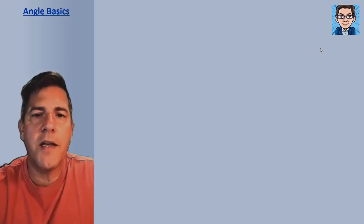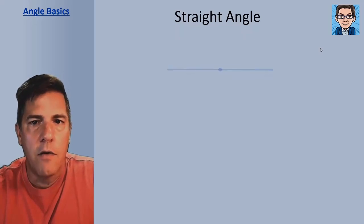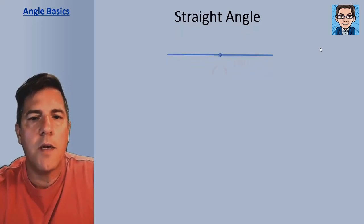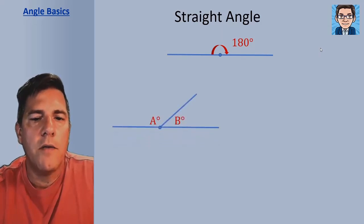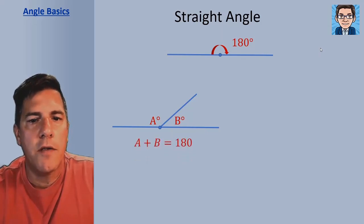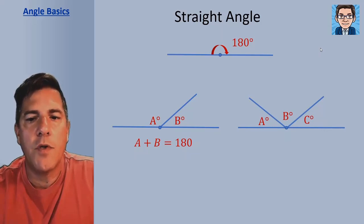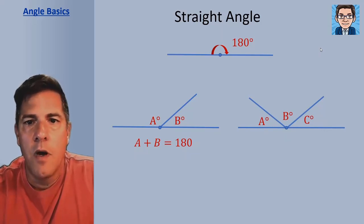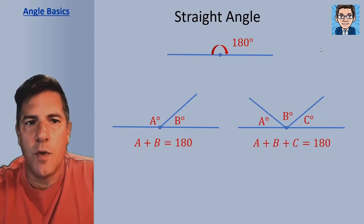Let's take a look at some angle basics. First of all, a straight angle or a line is going to be 180 degrees. So any two angles that form a straight line, like here A and B, are going to add up to 180 degrees. Or any three or more angles — as long as they add up to a straight line, you can see when you put A, B, and C together they add up to 180 degrees.